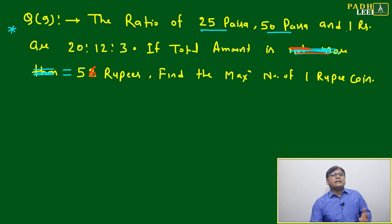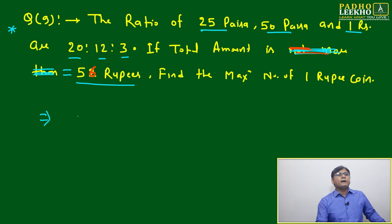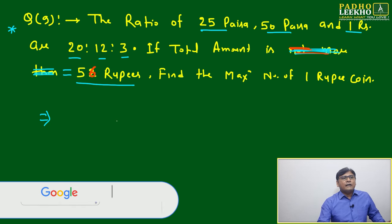Here the question is: the ratio of 25 paise, 50 paise, and 1 rupee coins are in 20:12:3. If the total amount is equal to 56 rupees, find the maximum number of 1 rupee coins. We have to express this in terms of sum.